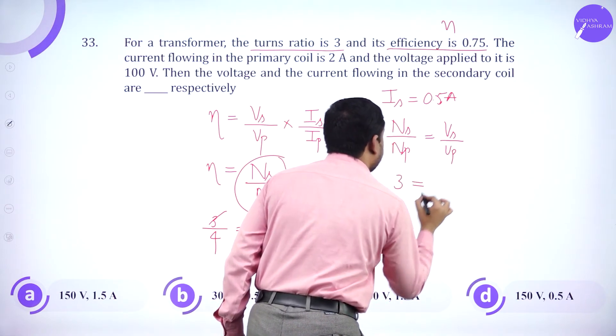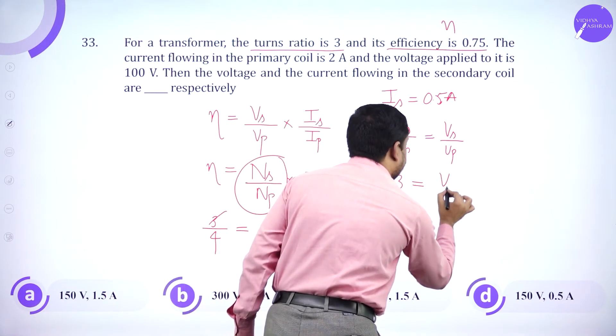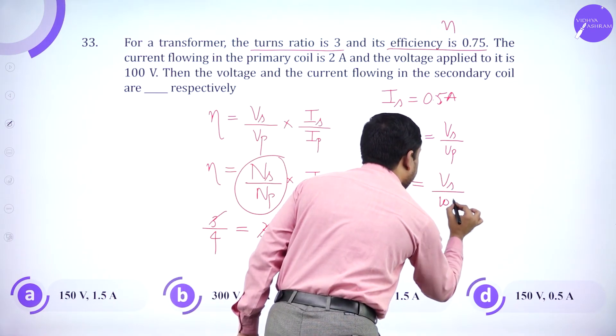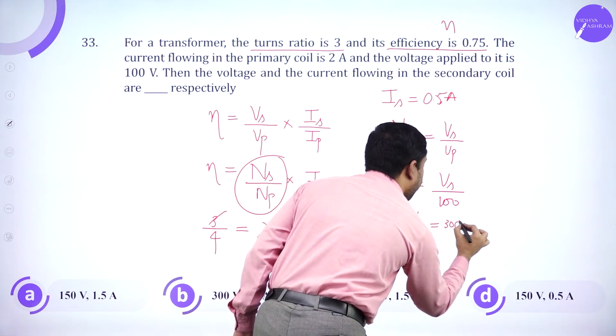So 3 equals voltage across the secondary by 100. So Vs is 300 volts.